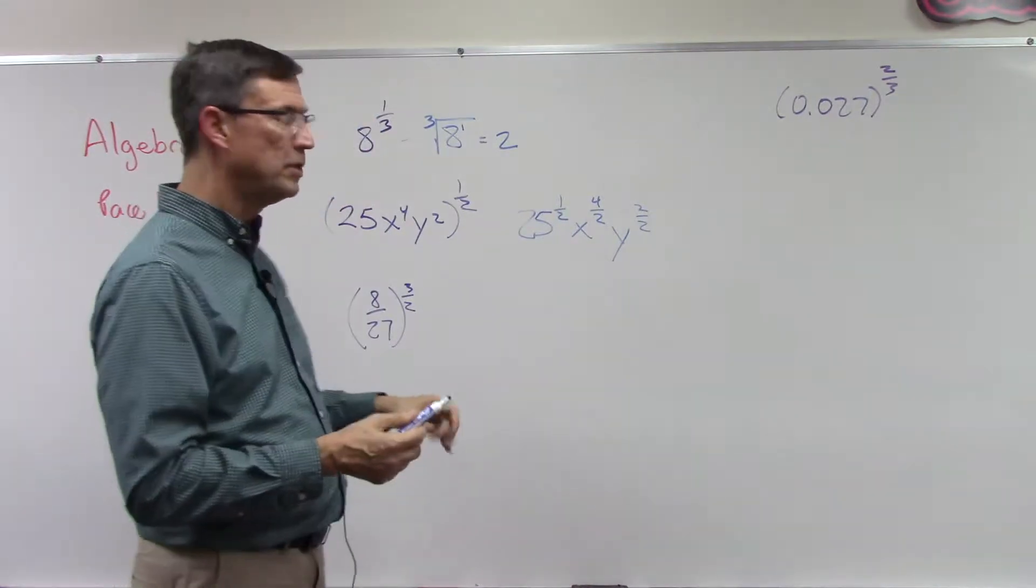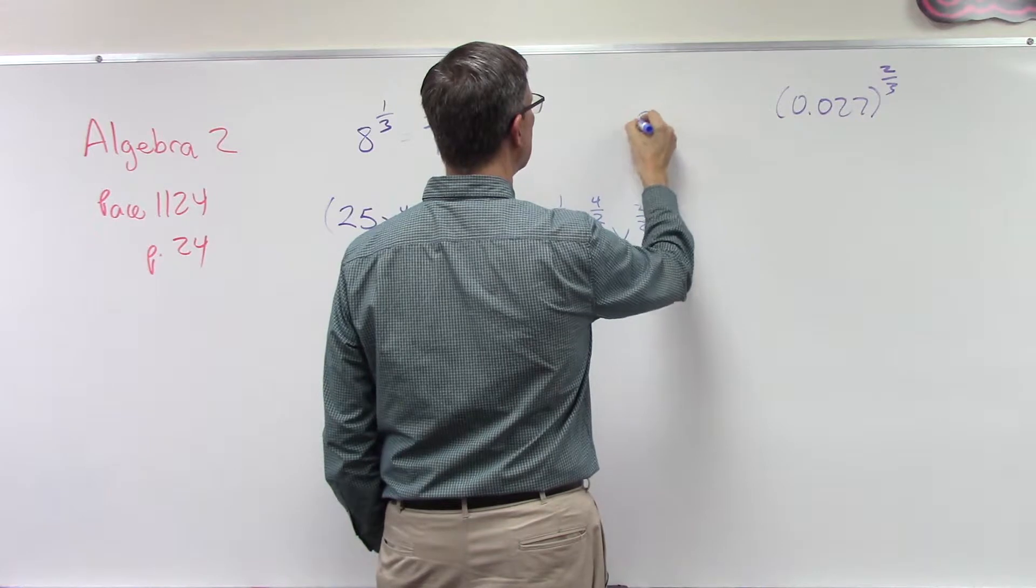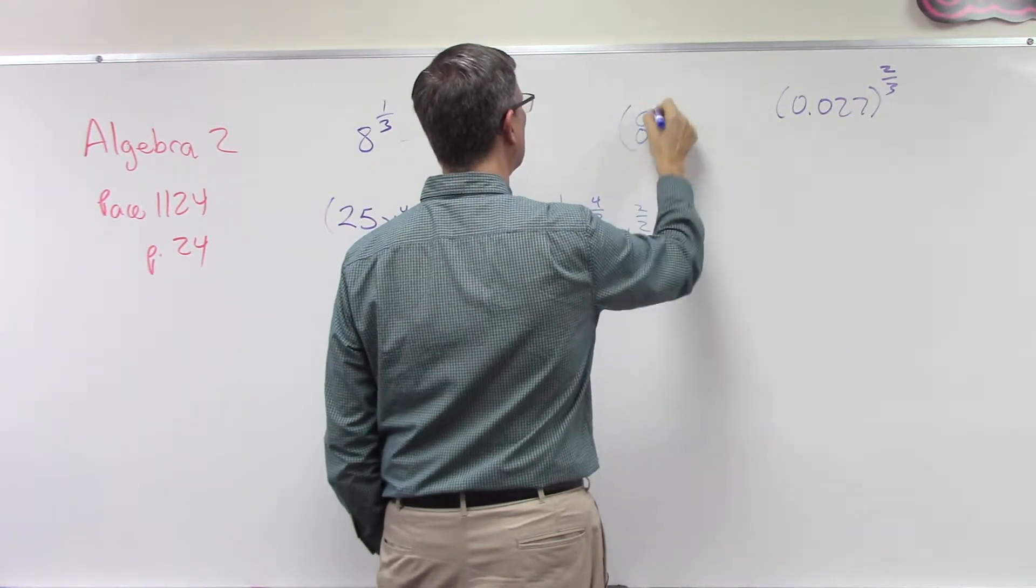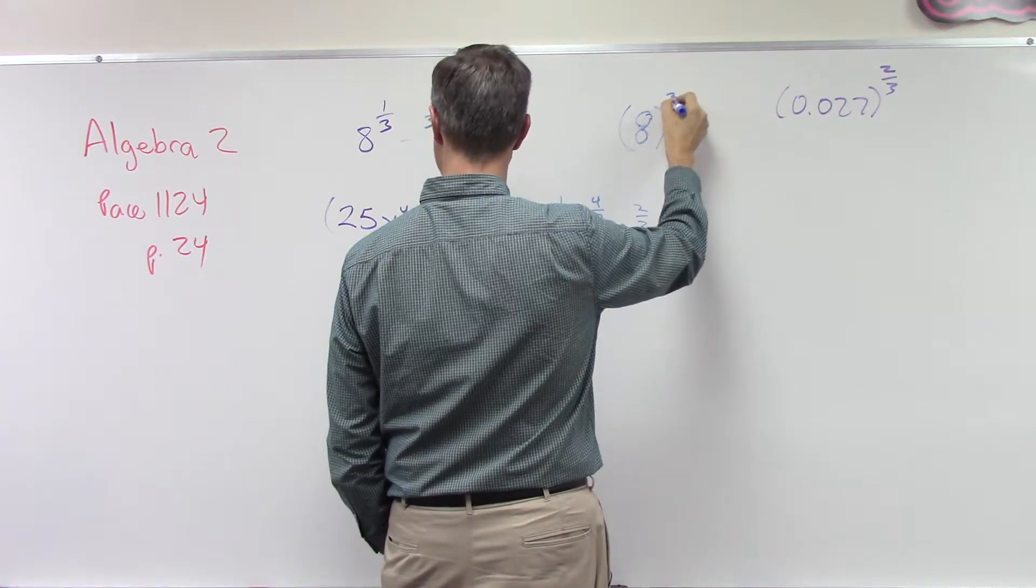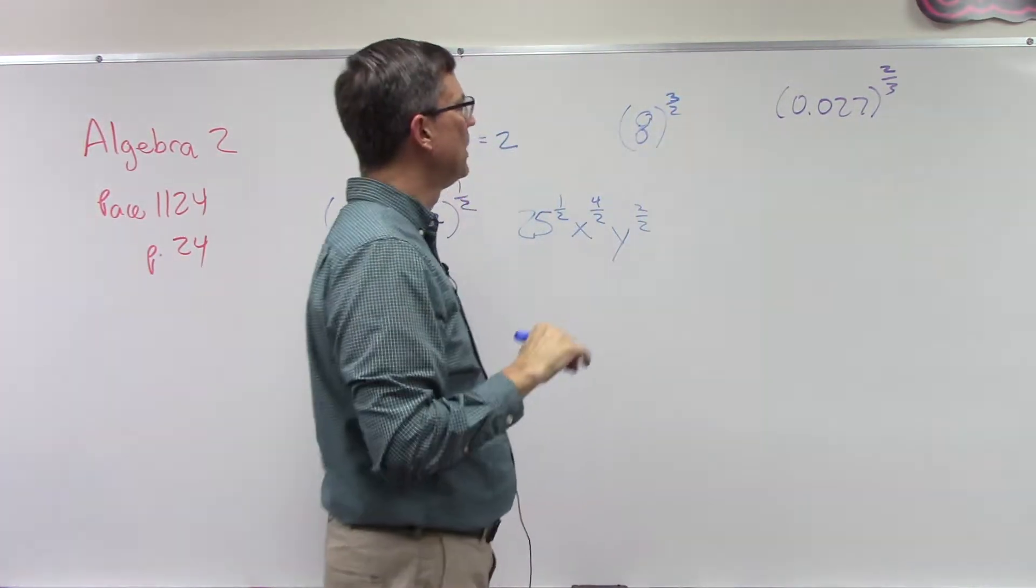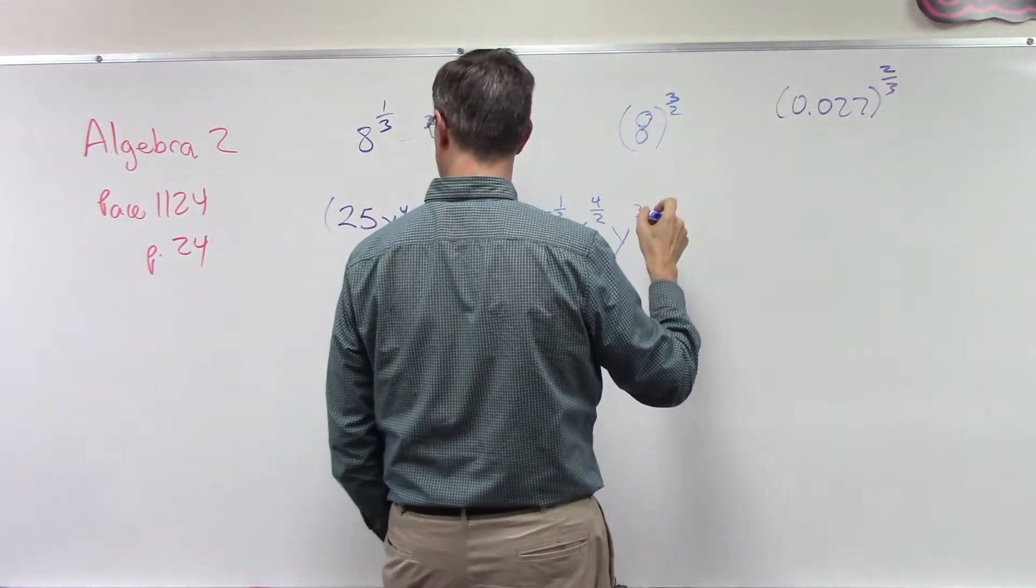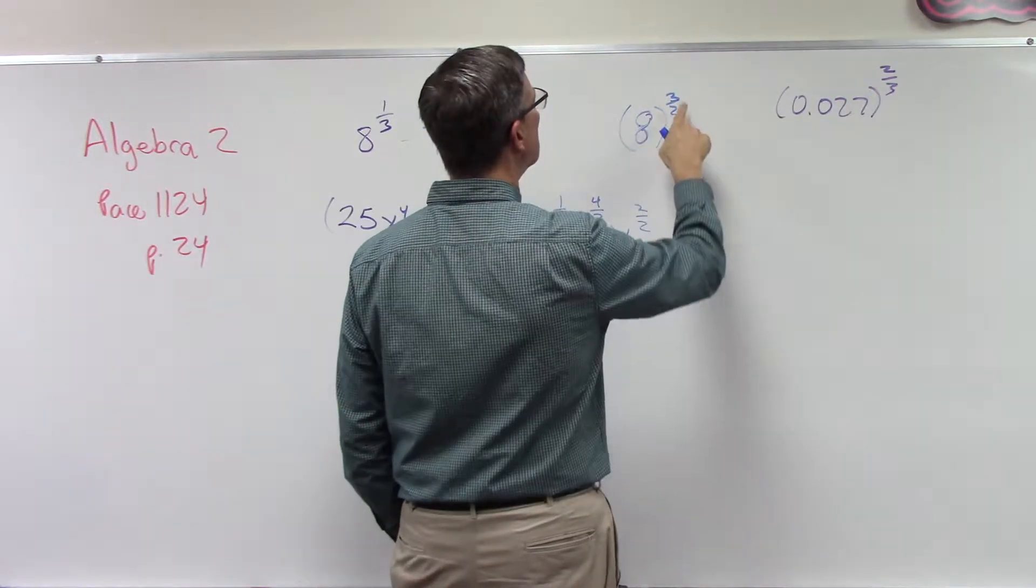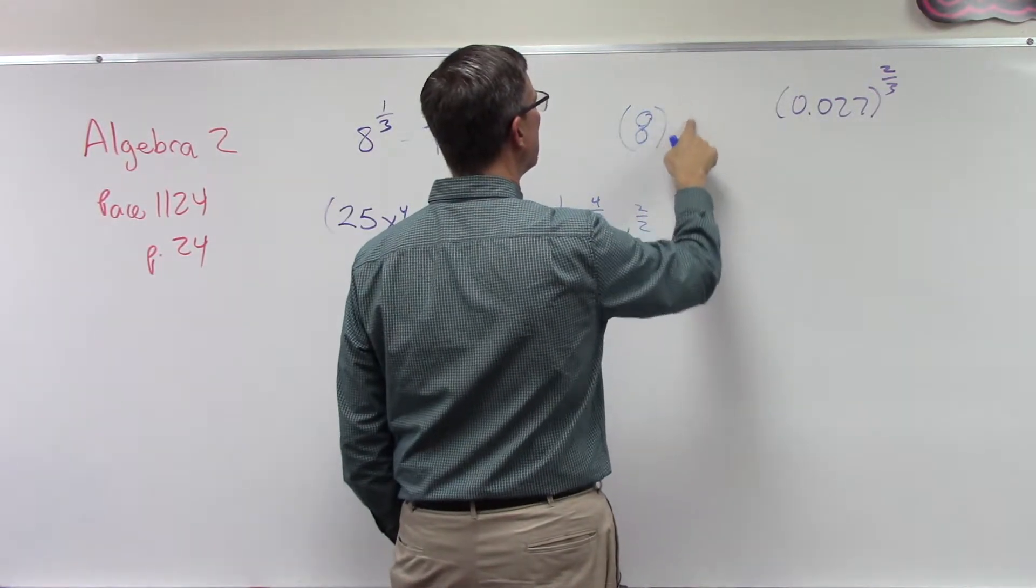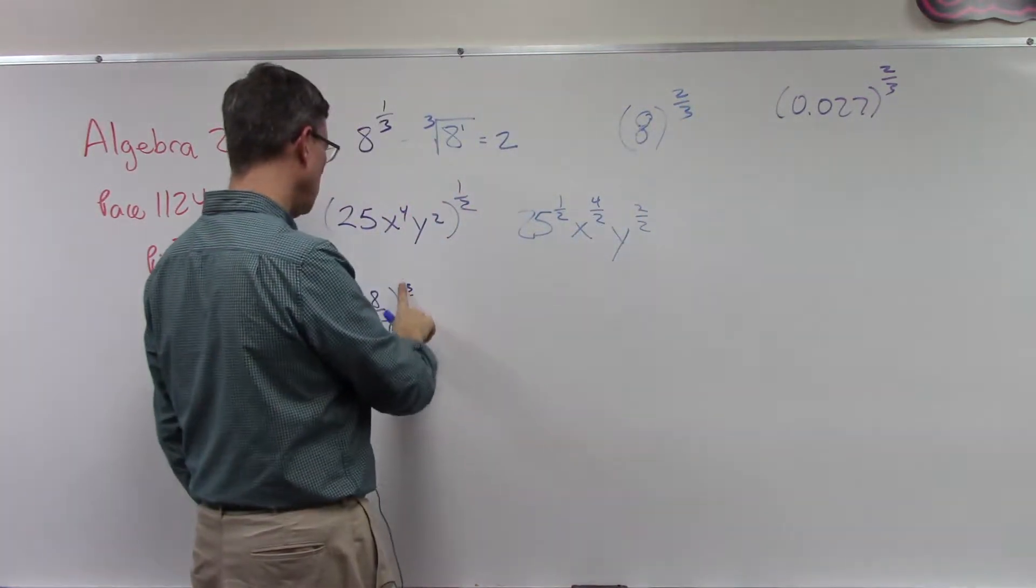Let me show you an easier one first. If I had, let's say, 8 to the 3 halves power... actually that's not what we want. 2/3. I think this one's even 2/3. I think I miswrote that.